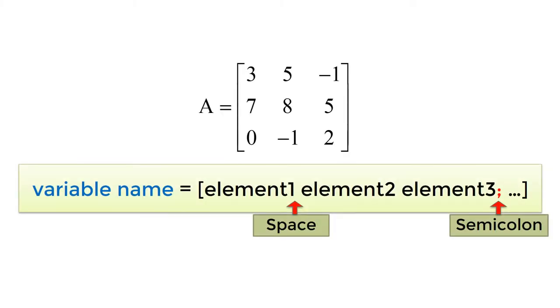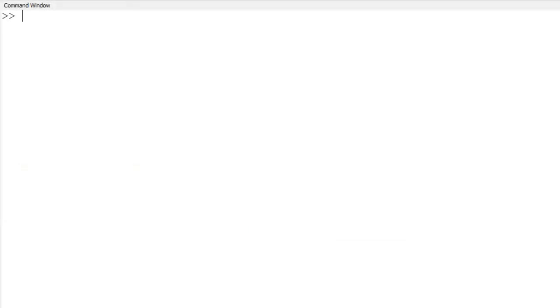Let's talk about how to create a matrix. A simple approach is to use a square bracket. Since the matrix is 2D element arrangement, we need to use empty space as a column separator and the semicolon as a row separator. To create the matrix A, type A, equal sign, bracket with the elements for the first row, 3, 5, and minus 1, followed by semicolon.